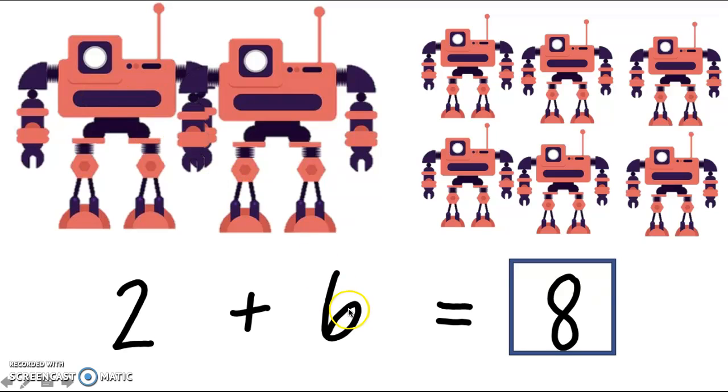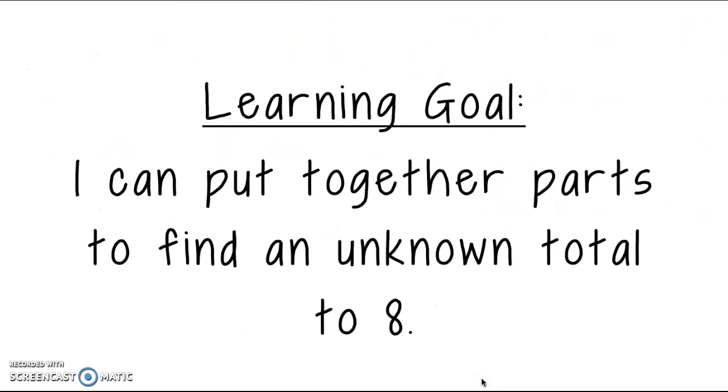Alright. So six, seven, eight. Perfect. So I saw eight robots. Man, oh, man. You are so good. Thank you for helping me out, friend. Because our learning goal said I can put together parts to find an unknown total to eight. That's exactly what we've been doing. We've been putting in the other parts to figure out our unknown total. Like how many owls did I see? How many dogs did I see? How many robots did I see? We didn't know it was a mystery and we figured it out.